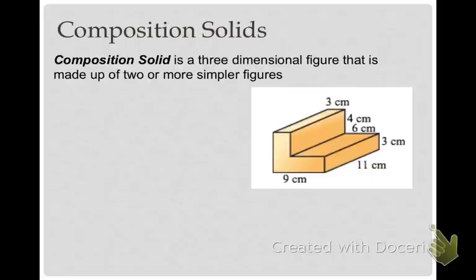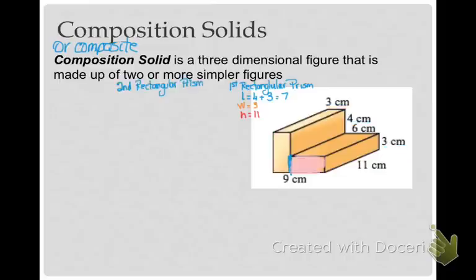Sometimes we're going to have what are called composition or composite solids. That is a three-dimensional figure that's really made up of two or more simpler three-dimensional figures. Looking at this, you can see that it's really two rectangles, one set on its side and one laid down. My first rectangular prism has length four plus the little segment on the end, which is three, so the length is seven. The width is three and the height is 11. My second prism has length six, width three, and height 11.